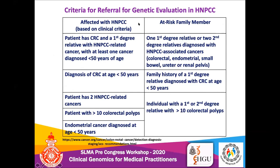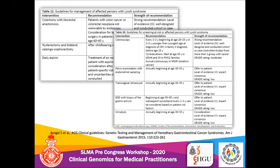Regarding the criteria for referral for genetic evaluation of HNPCC — based on NCCN guidelines — for an affected individual suspected to have HNPCC or an at-risk family member, key criteria include: a first-degree relative with an HNPCC-related cancer with onset less than 50 years; two HNPCC-related cancers in one individual such as endometrial and colorectal; more than 10 polyps; or endometrial cancer onset less than age 50. Finding these markers should raise a high index of suspicion for an underlying HNPCC condition.